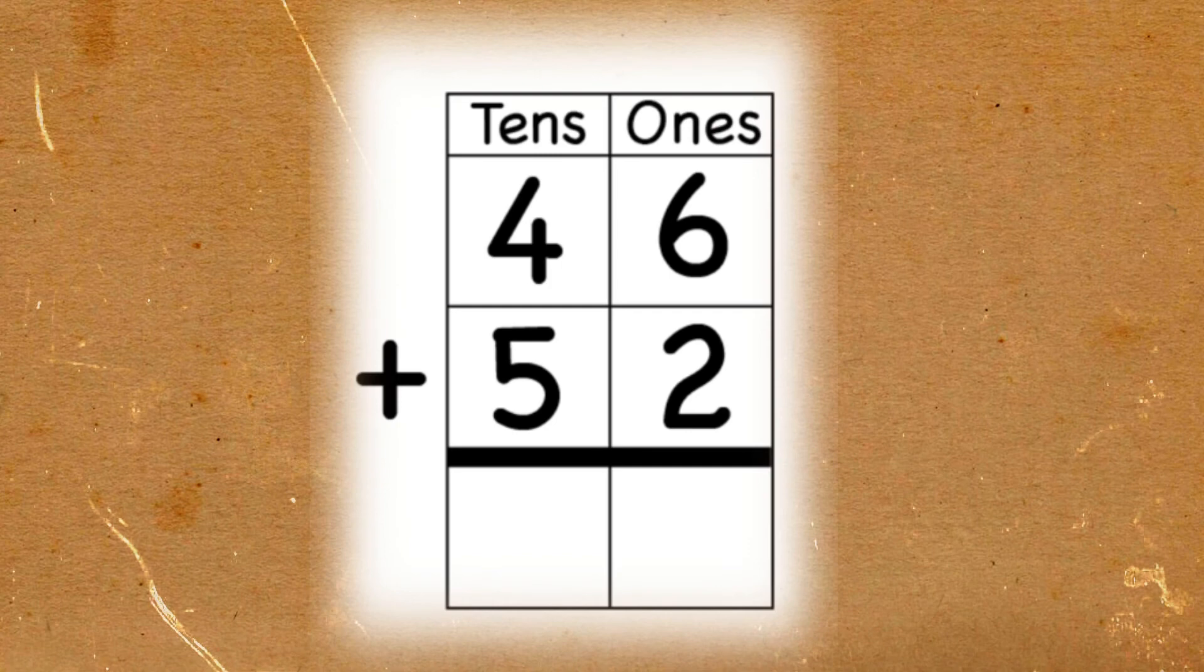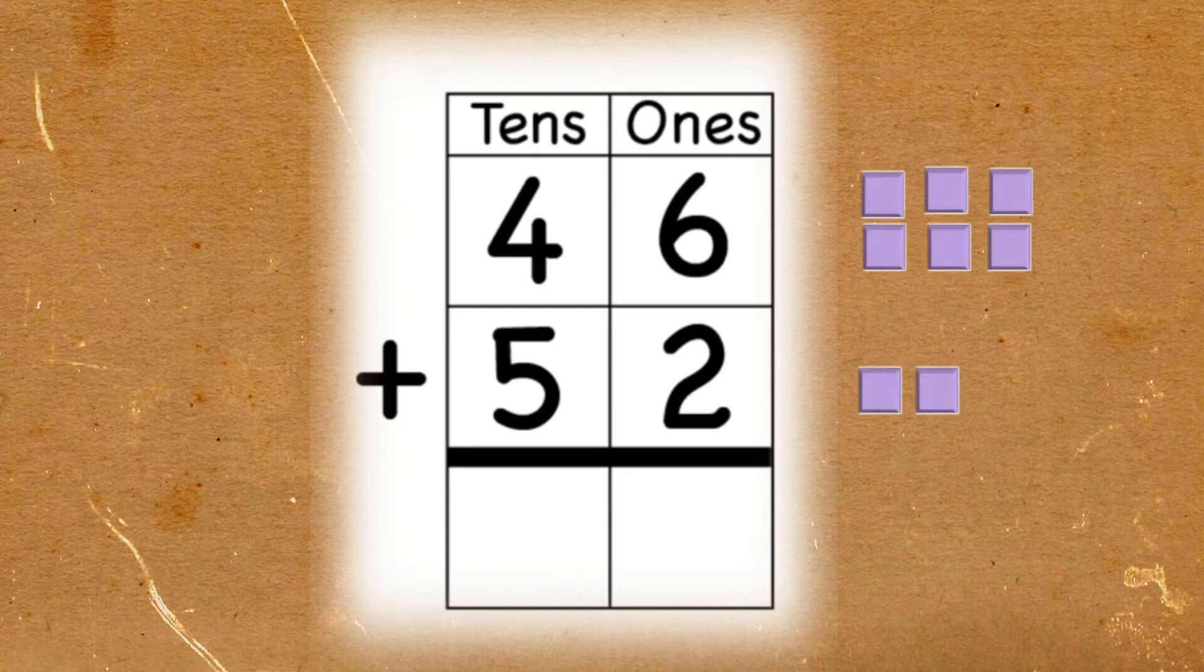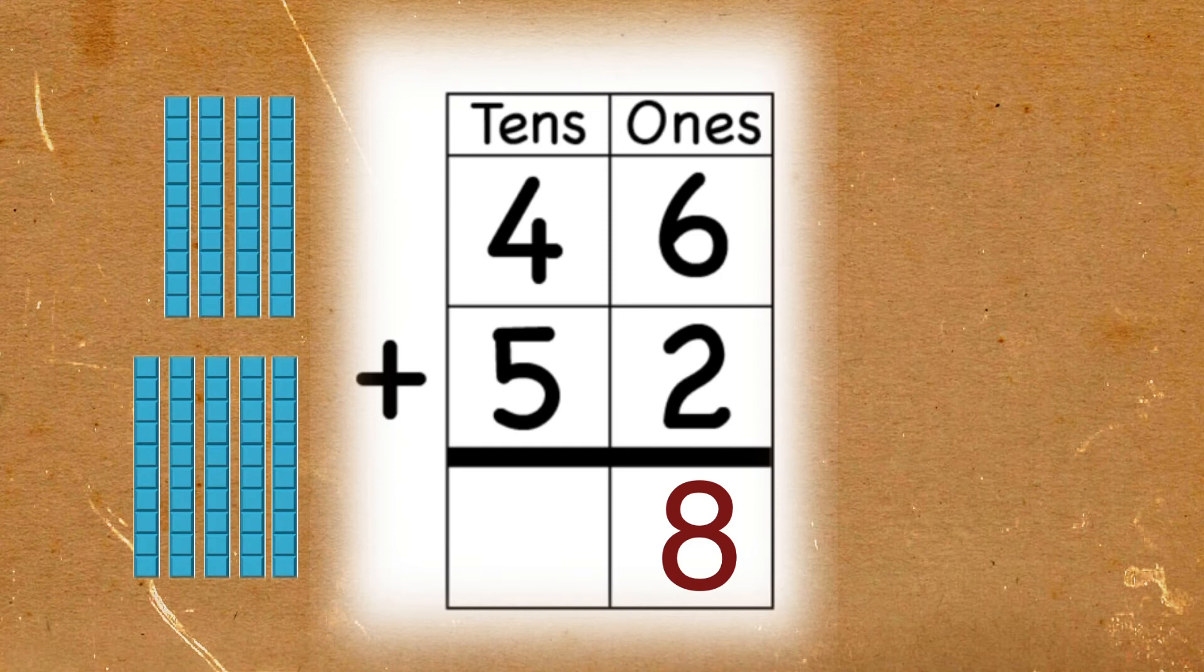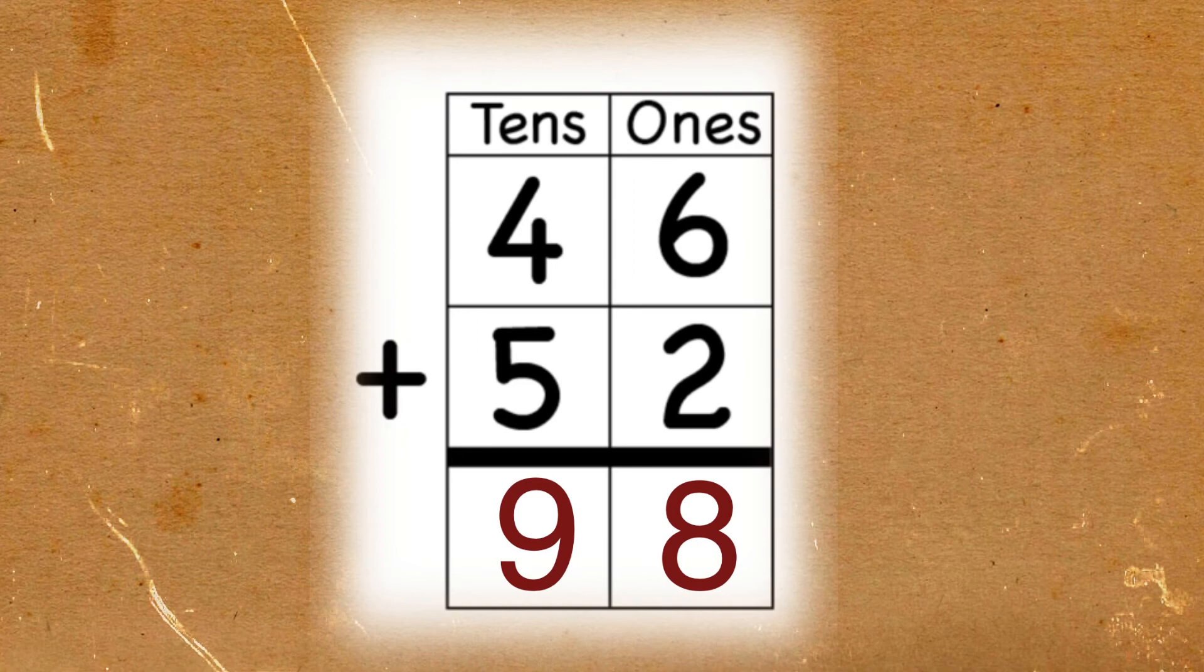Again, focus on the ones place. 6 plus 2 is equal to 8. Now let's go to the tens place. 4 plus 5 is equal to 9. The final answer is 98.